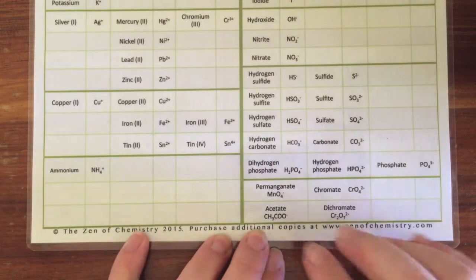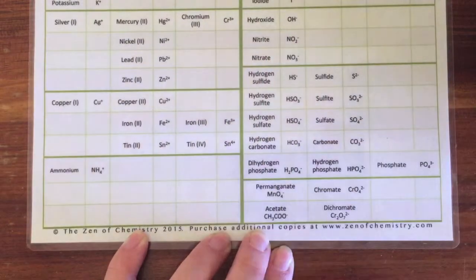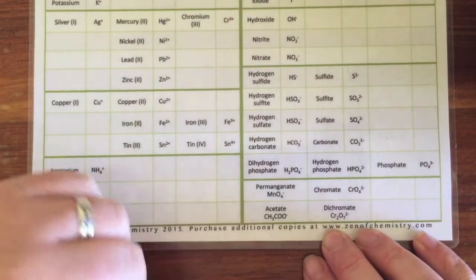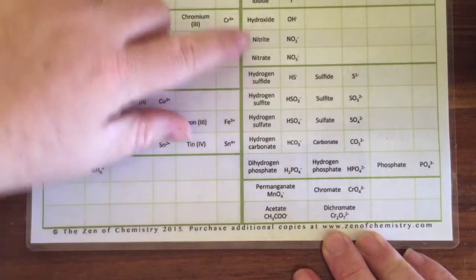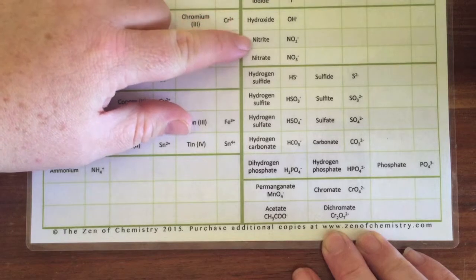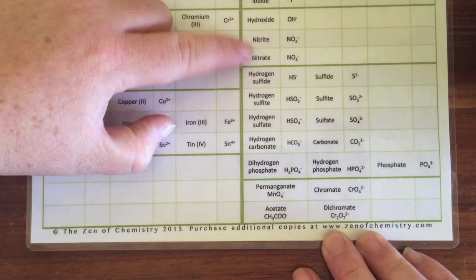If we come over to our anion side, I've split them up into three different groups. We've got our simple or diatomic ions: hydroxide, nitrate, nitrite, and nitrate.